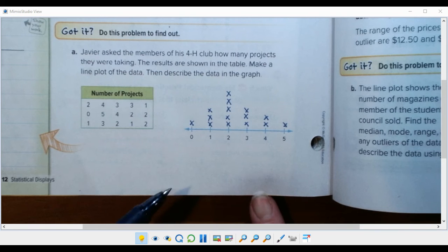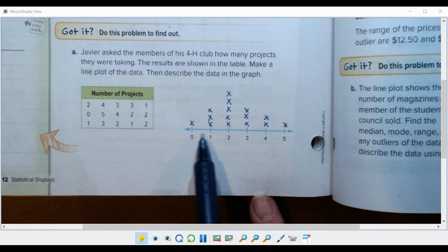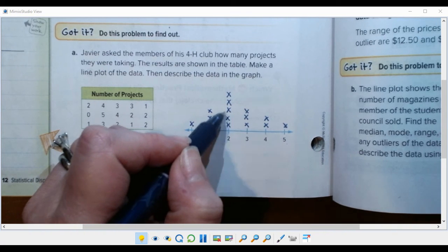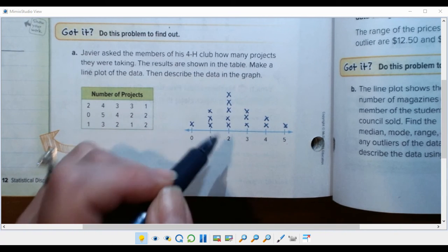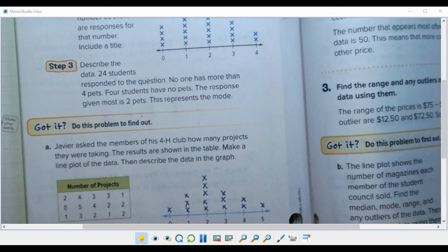Now if you had to describe the data as is asked for here you could say the mode is two, the highest is five, the lowest is zero, the range is five. And if I actually worked it out the median would be right here at two which if you notice is not the middle number but when I check out all the x's that's where the middle number would fall.